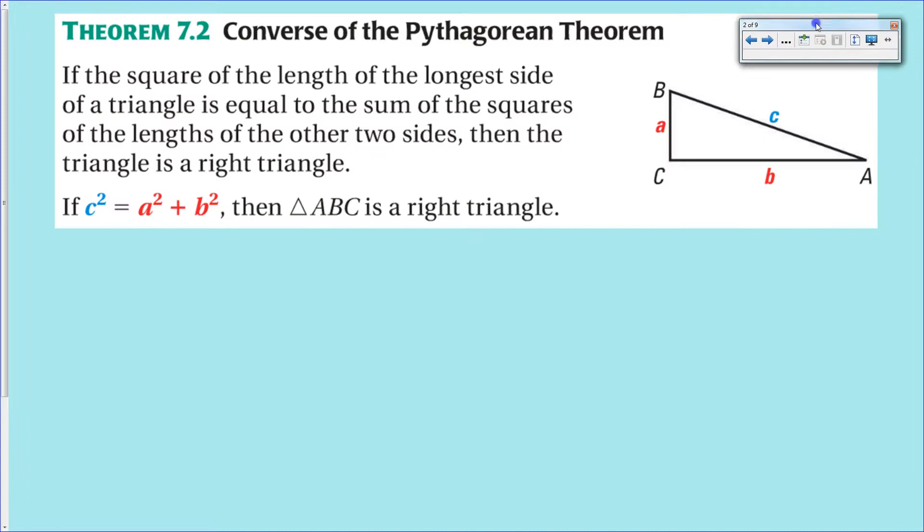Today we're going to talk about the converse to the Pythagorean Theorem, and the converse, just like any other converse, is just the theorem stated in reverse. The Pythagorean Theorem says that if you have a right triangle, then the sum of the squares of the two legs is equal to the hypotenuse squared, or a² + b² = c².